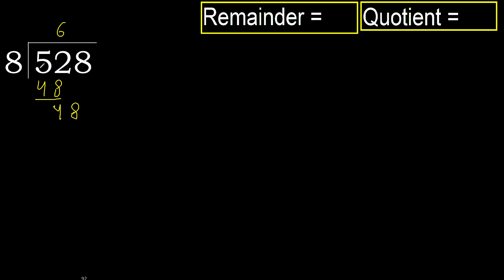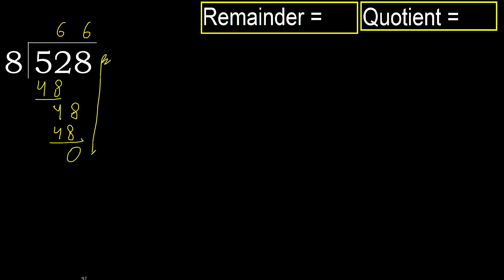48 multiplied by 6 is 48, which is not greater. Subtract. Next, there is no number remaining, therefore finish it.